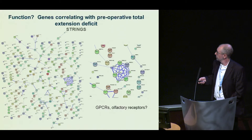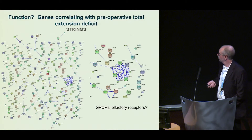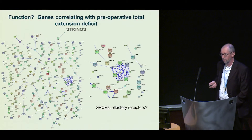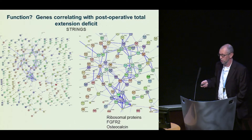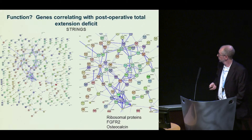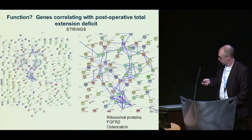When we put those genes into a package that looks at protein-protein interactions — STRING — for the genes correlating with pre-operative TED, you can see a little cluster of G-protein coupled receptors annotated as olfactory receptors but expressed in Dupuytren's tissue. We don't know what they do, but they've been shown to interact with each other, and it's interesting that they all correlate with pre-operative TED. For the post-operative correlated genes, you see many more interacting proteins: protein synthesis proteins, FGF signaling pathway proteins, and interestingly osteocalcin proteins — a bone protein shown to regulate glucose metabolism — so these may have some role in the disease process.